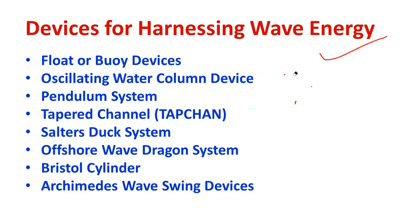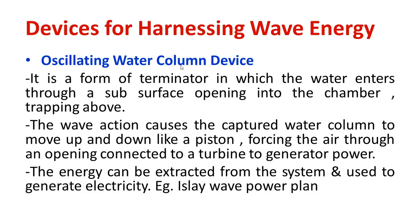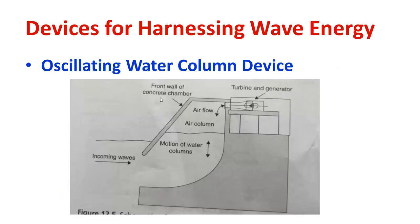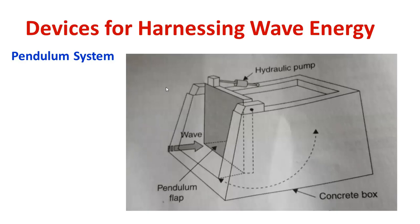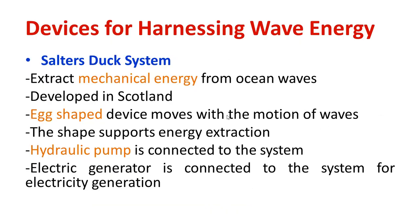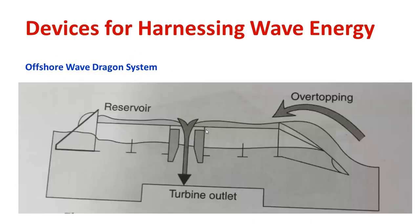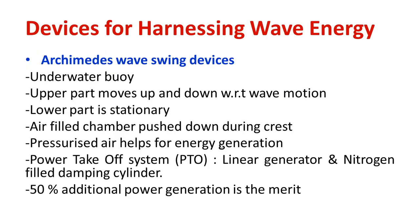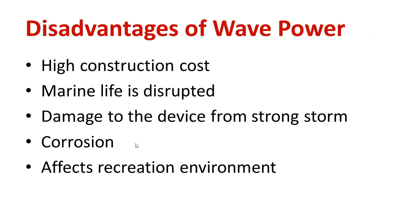Please refer to my previous video. In this session I am discussing only the answers. You can explain individually what do you mean by buoy devices, the importance of buoy devices, oscillating water column device — possibly draw the diagram. If you draw the diagram, your answer becomes more flexible. Pendulum system works on the simple harmonic motion principle. Then tapered channel — what kind of turbine is employed for the tapered channel. Salt dust system — remember the shape. Then offshore wave dragon system, Bristol cylinder type — how does it operate. Archimedes waves work based on Archimedes principle. Remember these, and also the advantages and disadvantages of wave power.